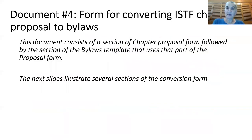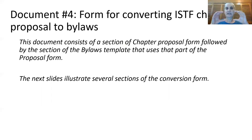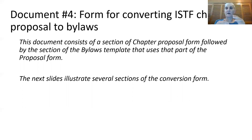The next step: you've written out your proposal and checked over the bylaws template to see what's involved. Now you go to document four — the form for converting the ISTF chapter proposal to your actual chapter bylaws. This form takes a section of the chapter proposal form and follows it with the corresponding section of the bylaws template.